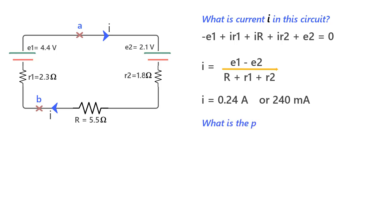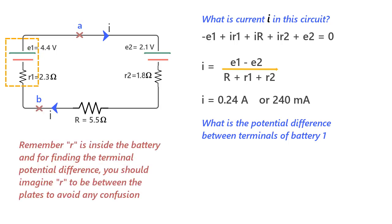So the next question is, what is the potential difference between the terminals of battery one? And this, in a way, is equivalent of asking what is the potential difference between points A and B, because you can see that A is at the same potential as this battery plate and B is at the same potential as this plate.